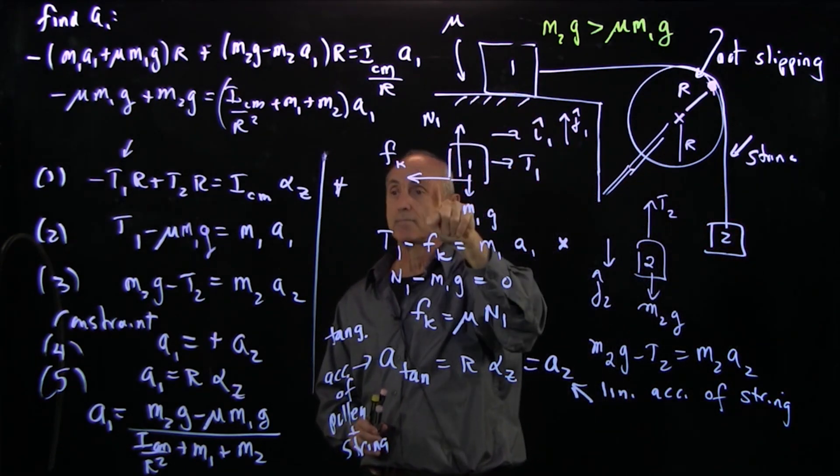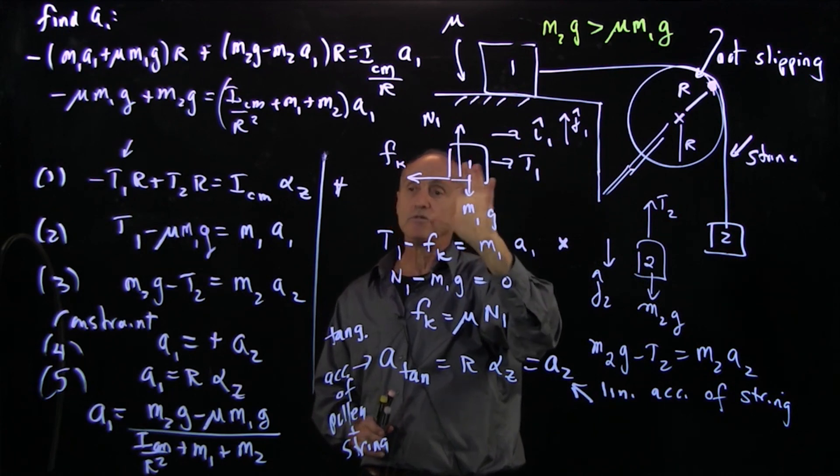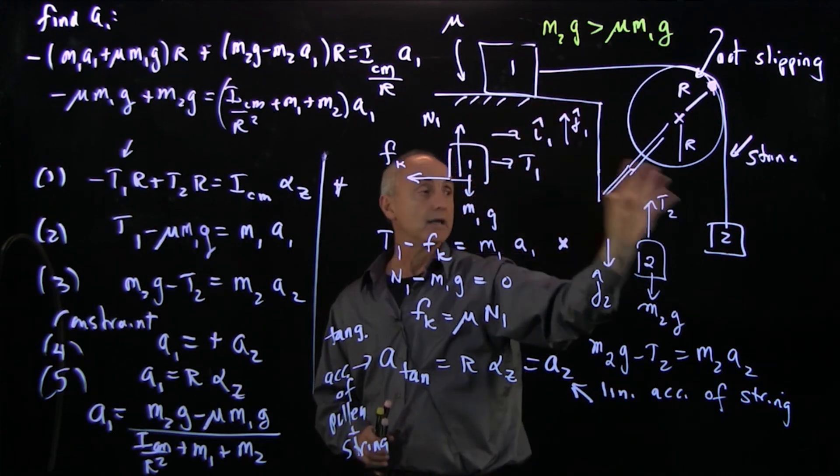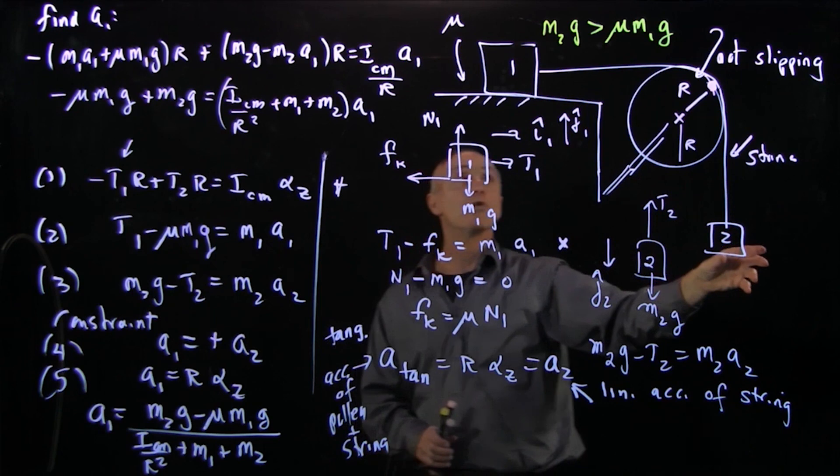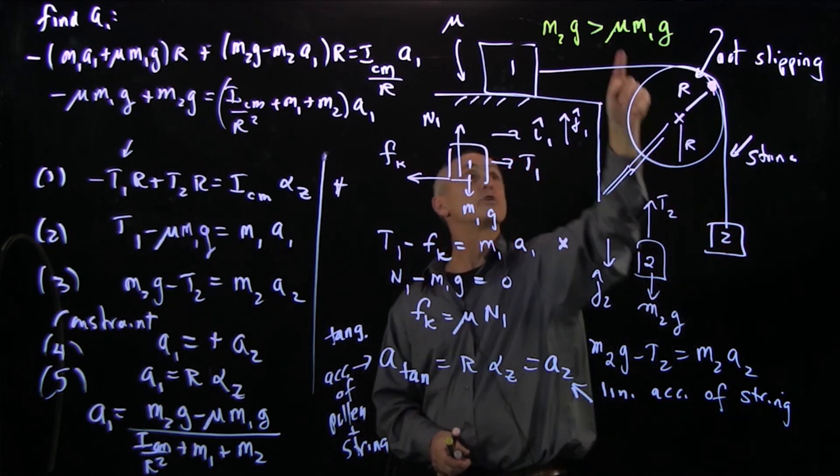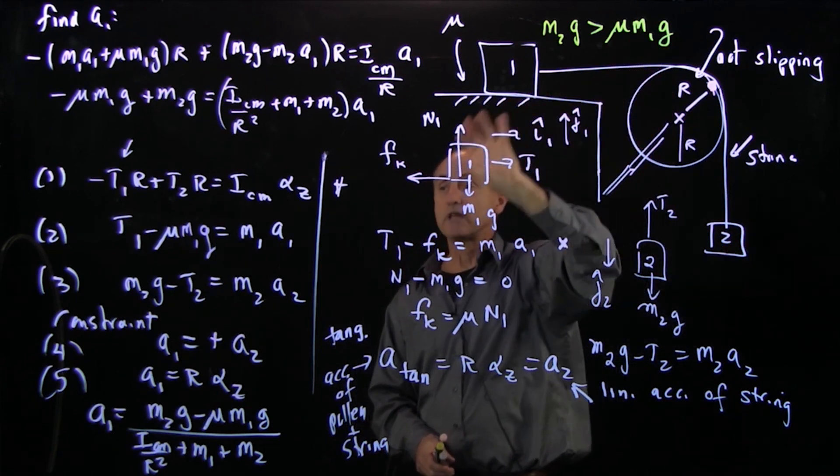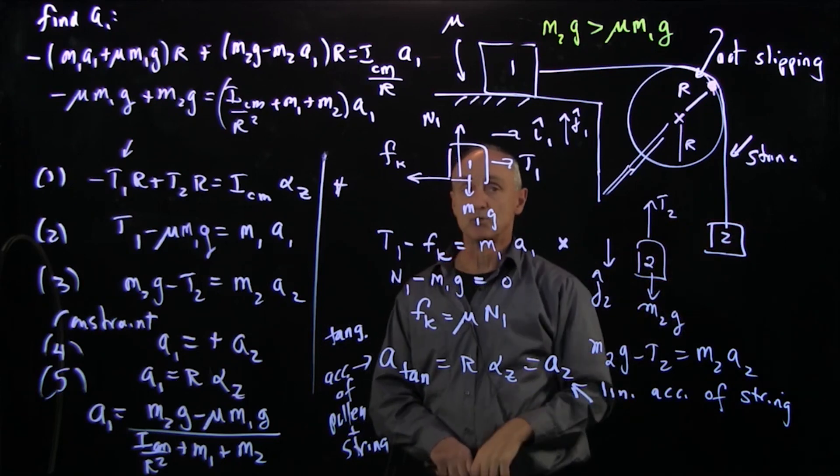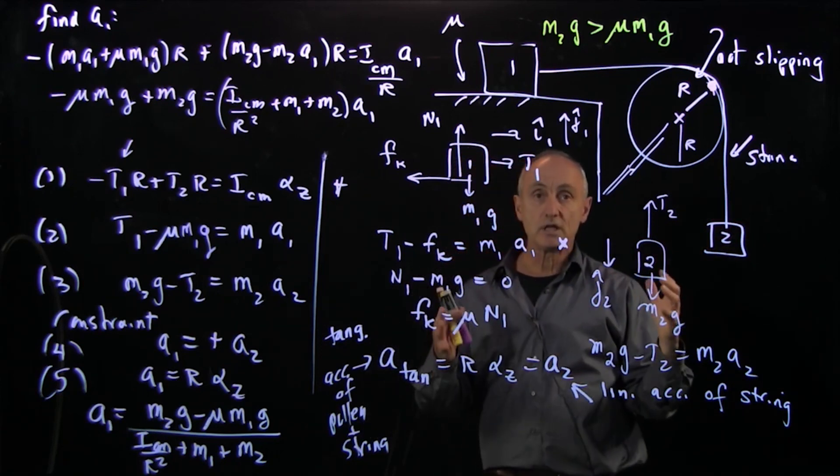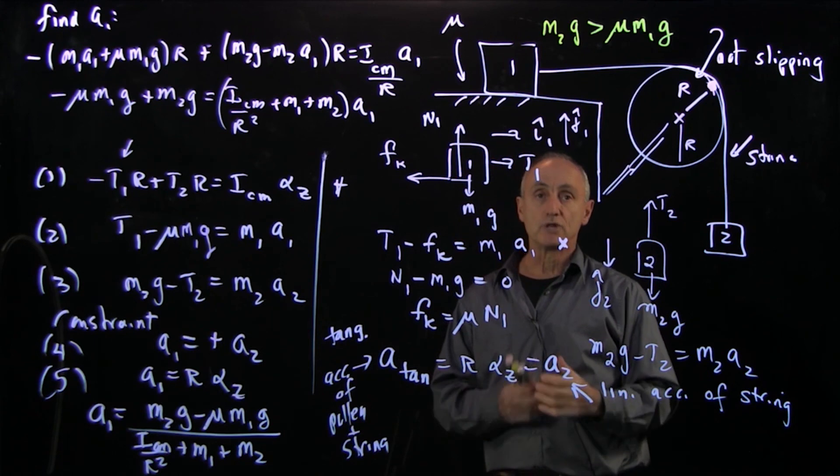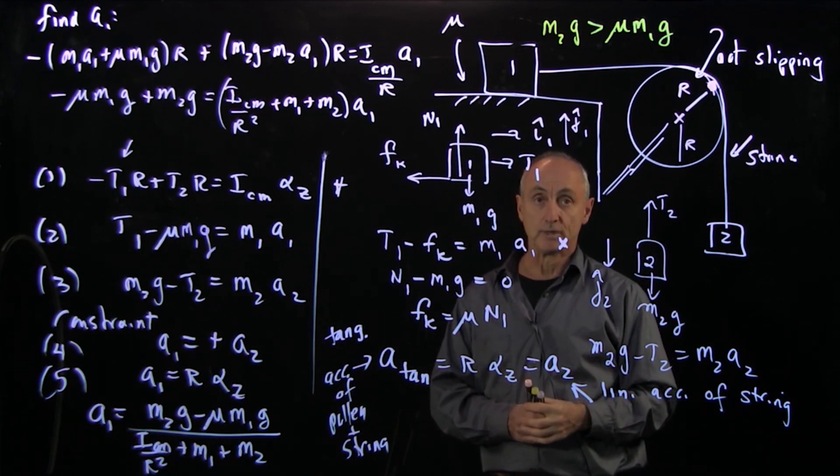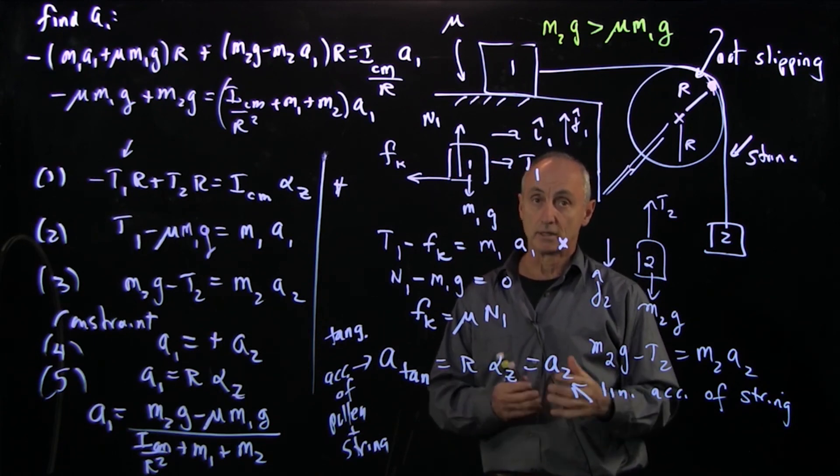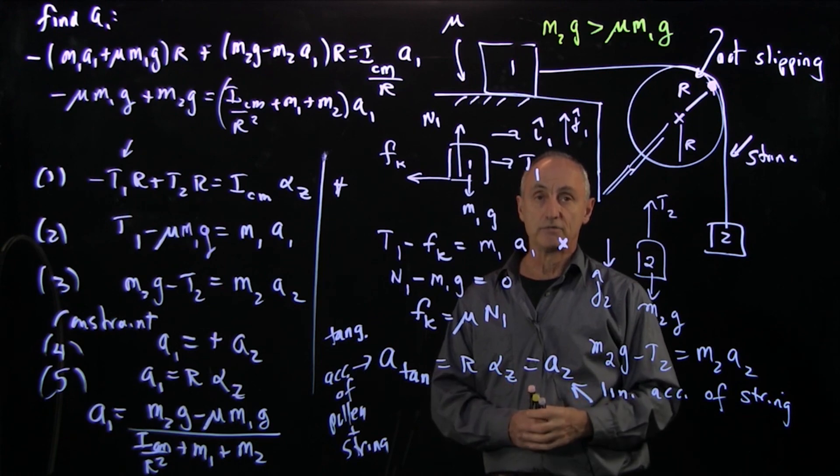And that would vary depending on how much weight were here. So if you went from zero to mu M1g, the static friction would depend on how much weight that's there. So here is a full analysis of rotational and translational motion - takes a little bit of time and a little bit of care, but we've done it.